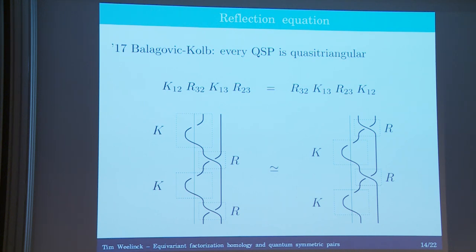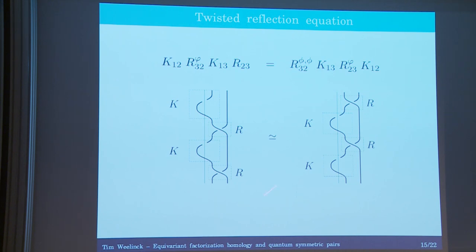There is a subtlety. If you study what the quantum symmetric pairs actually solve, it's not quite this equation — rather there are twists appearing in this reflection equation. Here phi is some involution on the quantum group, and somehow the R matrix is being twisted throughout this equation.